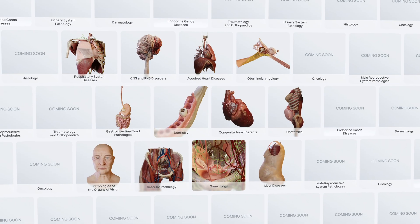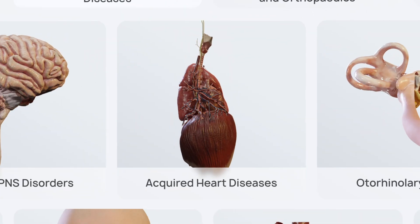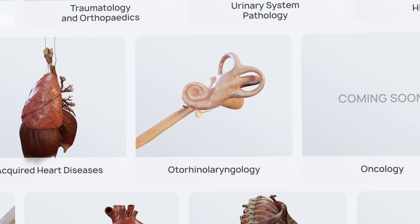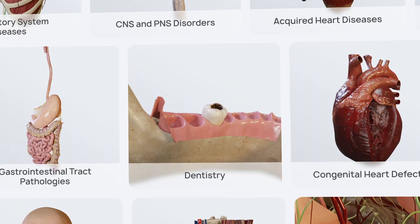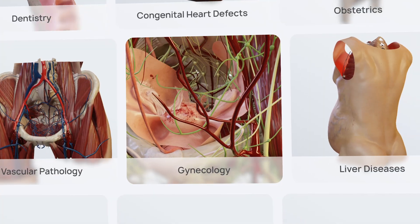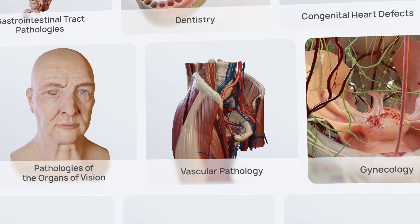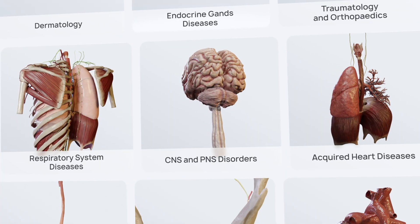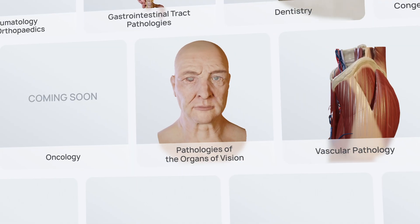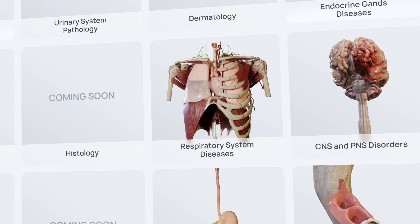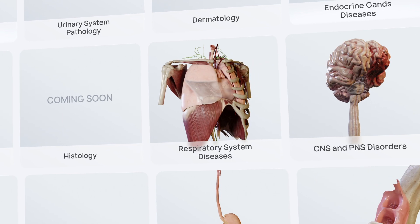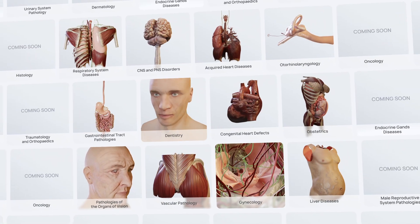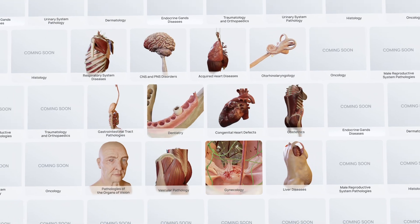The app includes a wide range of categories such as acquired heart diseases, congenital heart defects, otorhinolaryngology, dentistry, gynecology, vascular pathology, obstetrics, liver diseases, CNS and PNS disorders, pathologies of the organs of vision, respiratory system diseases, and gastrointestinal tract pathologies, with more categories planned for future inclusion.